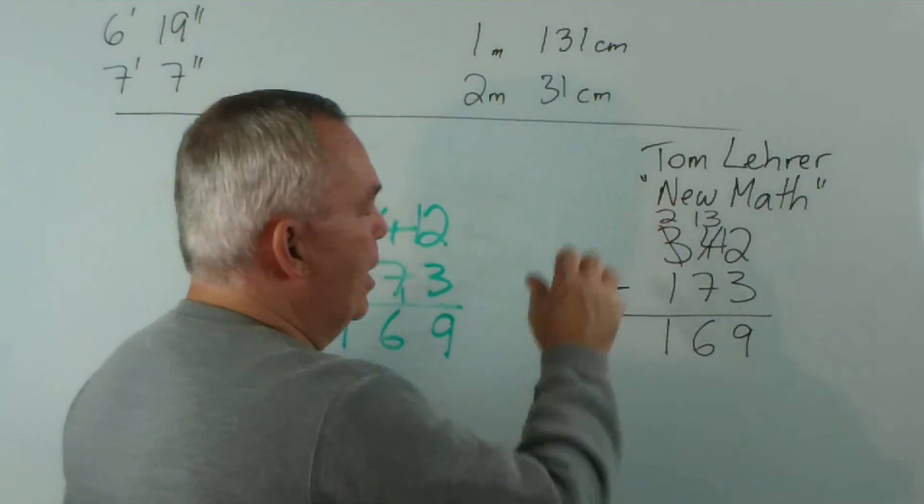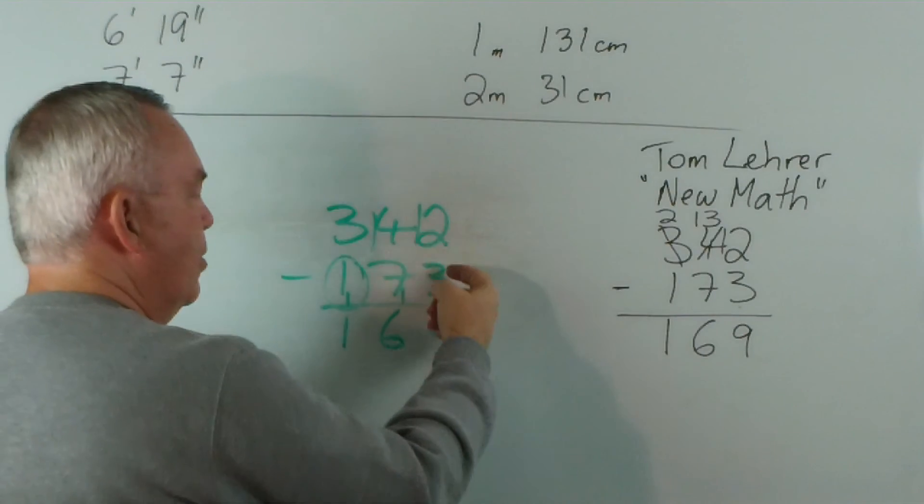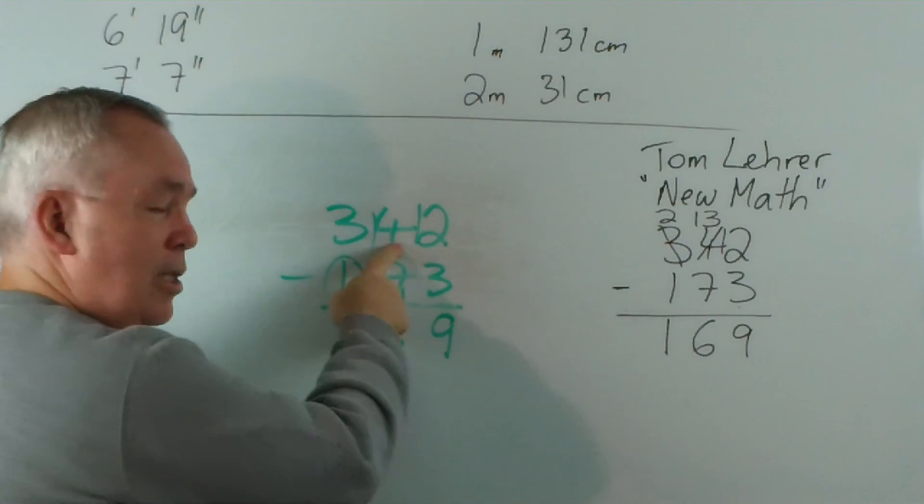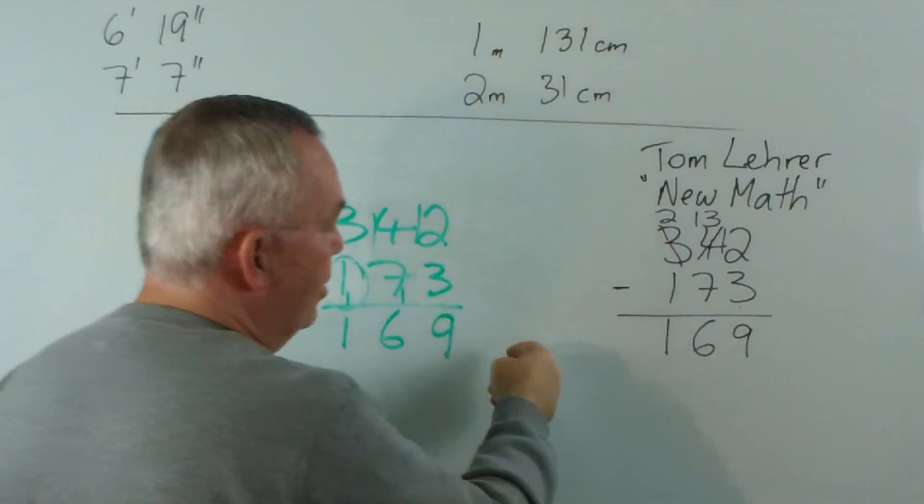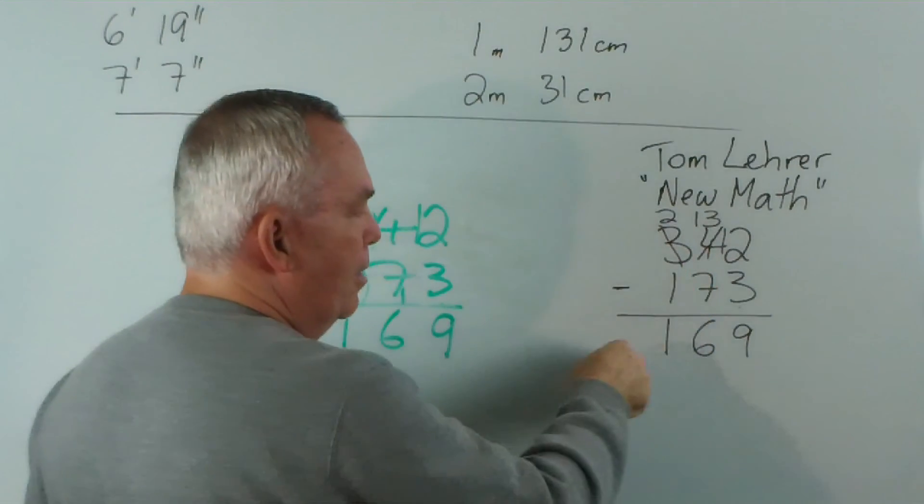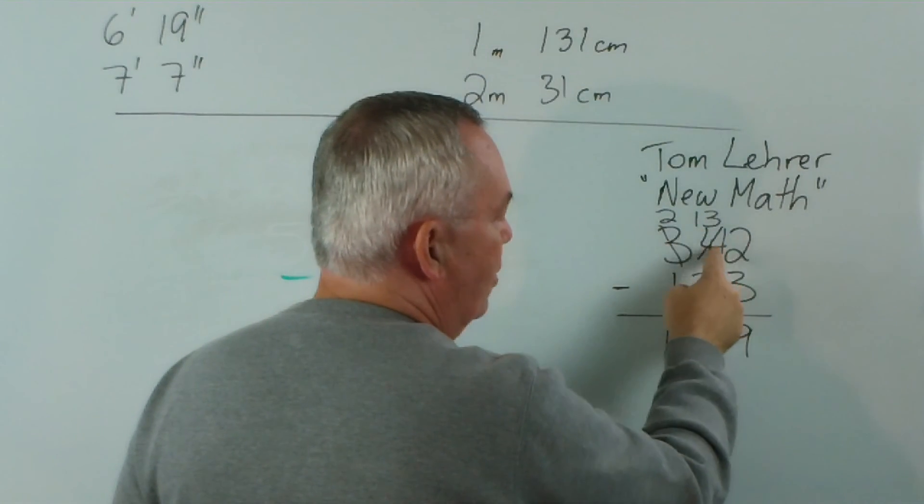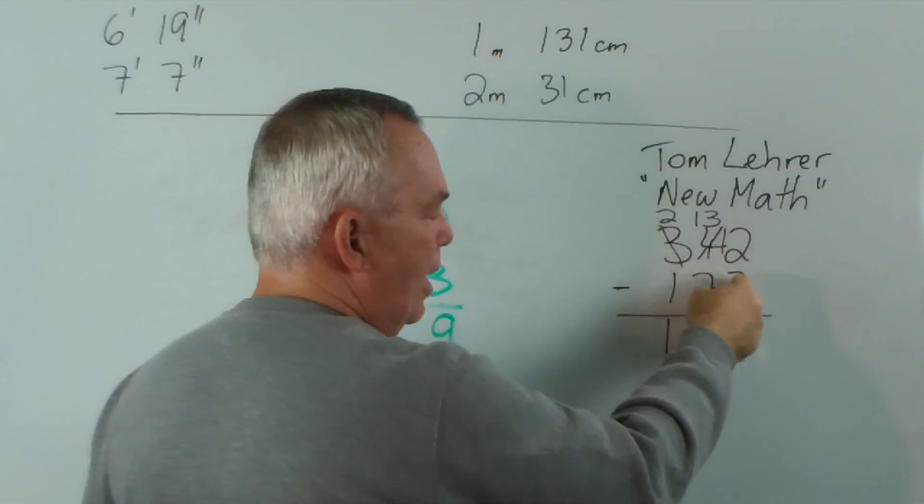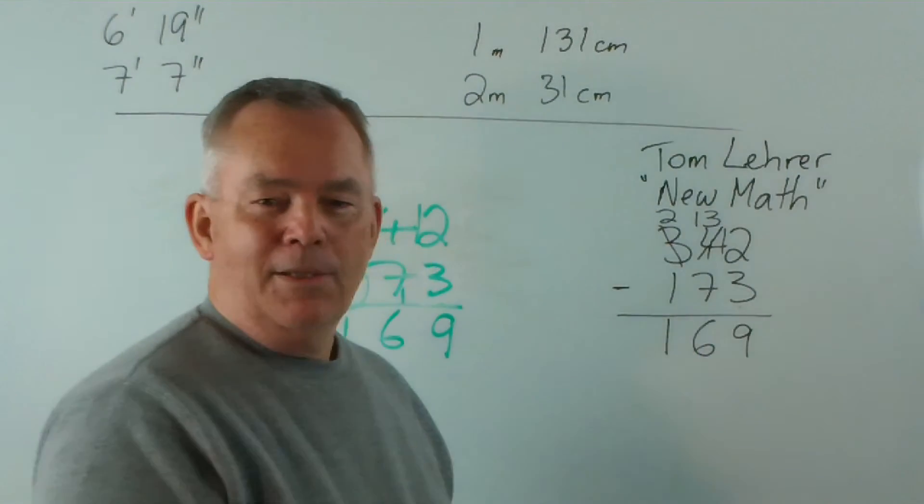but you'll find Tom Lehrer ... when he sings about this ... will say ... you know ... he can't take 3 from 2 ... 2 is less than 3 ... you see ... look at the 4 and the 10s place ... that's really 3 10s ... so, he's using this method ... and you change the 10 to 10 ones ... you add it to 2 ... and you get 1 2 base 10 ... which is 12 ... and you take away 3 ... that's 9 ... is that clear?